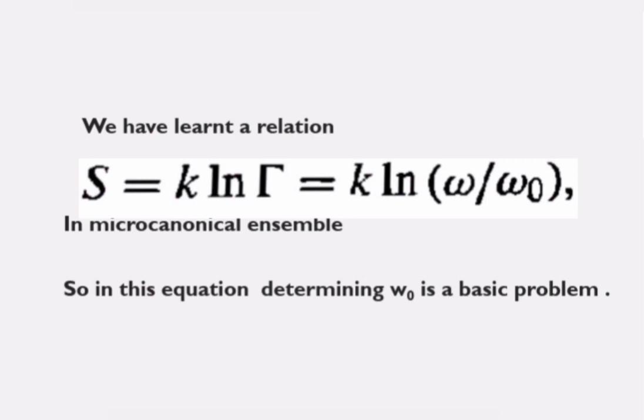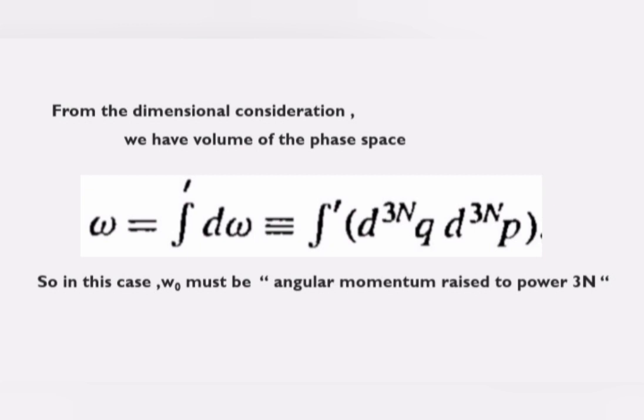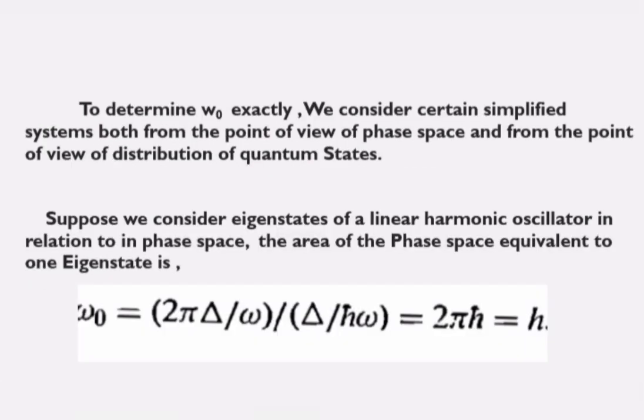In this equation, determining Ω₀ is a basic problem. Considering dimension-wise, the volume of phase space can be written as Ω = integral dΩ = integral d^(3N) q · d^(3N) p, where 3N is the dimensionality. In this case, Ω₀ must have dimensions of angular momentum raised to the power 3N, but we don't know exactly what Ω₀ is.